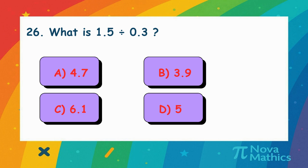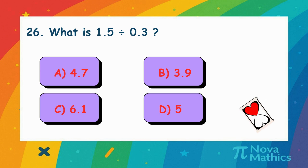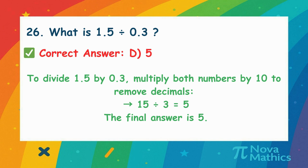25. What is 1.5 divided by 0.3? We want to divide 1.5 by 0.3. Multiply both by 10 to make them whole numbers. 15 divided by 3 equals 5.